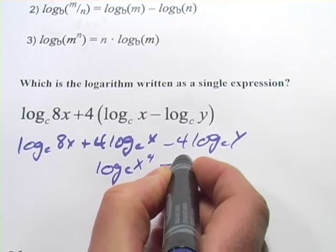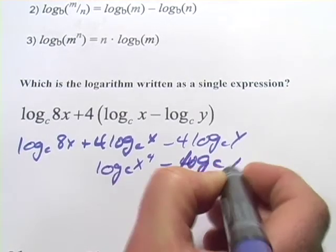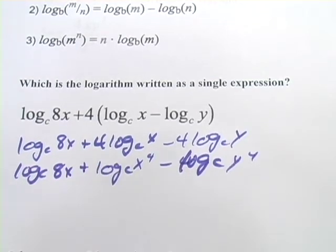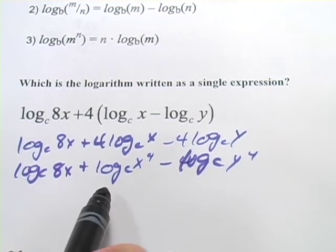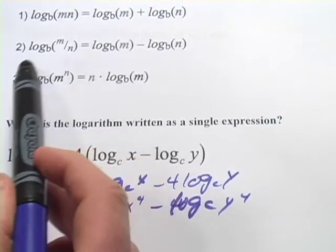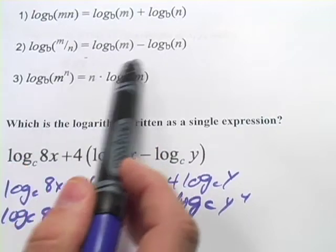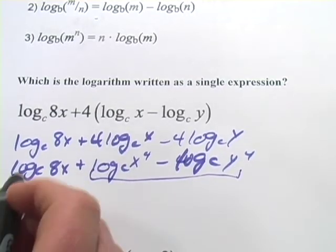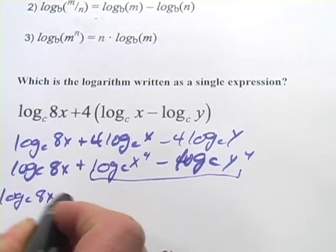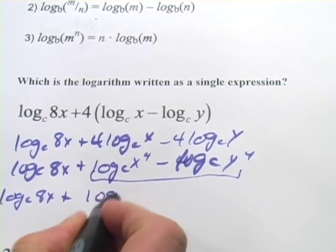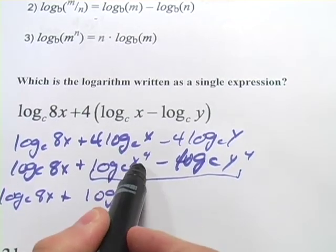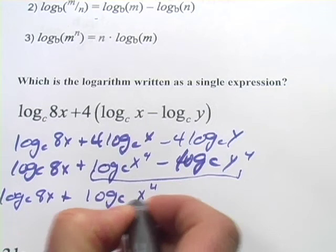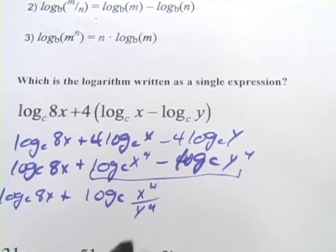And this one becomes log base c of y to the fourth, and we've still got our log base c of 8x. Now we've got some addition and subtraction. With our log properties, addition becomes multiplication and subtraction becomes division. Let's deal with the subtraction first — we put log base c of 8x plus, and this part becomes log base c of x to the fourth over y to the fourth. So subtraction turns into division.